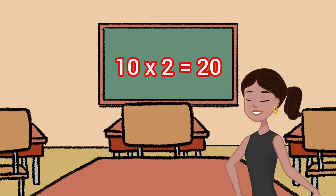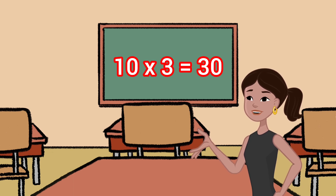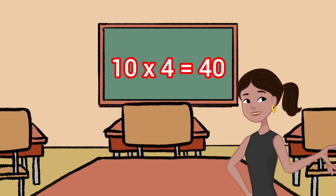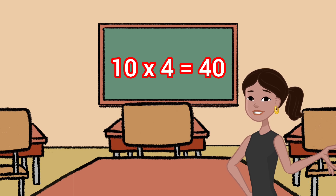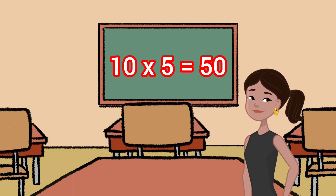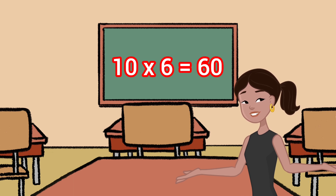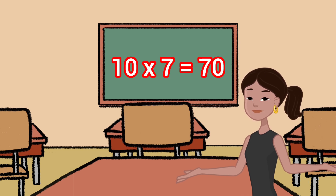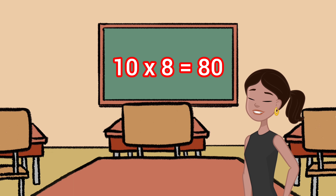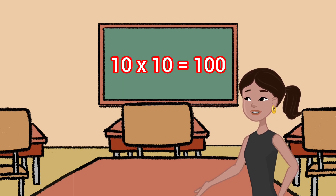10 2's are 20, 10 3's are 30, 10 4's are 40, 10 5's are 50, 10 6's are 60, 10 7's are 70, 10 8's are 80, 10 9's are 90, 10 10's are 100.